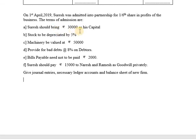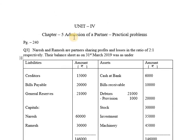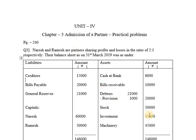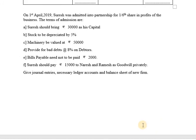The terms of admission are: Suresh should bring rupees 30,000 as his capital. So the new partner is bringing 30,000 as capital. Stock to be depreciated by 5%, so the stock value of 30,000 needs to be reduced by 5%. Machinery to be valued at 50,000 — the existing machinery value of 45,000 is to be increased to 50,000, meaning an increase of 5,000.